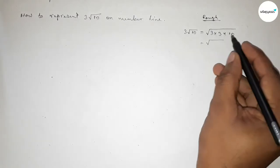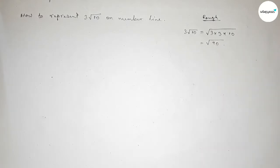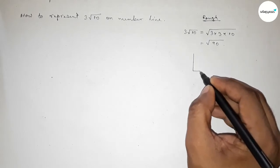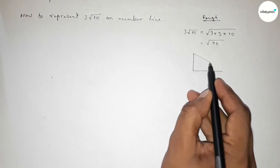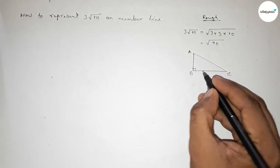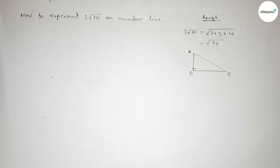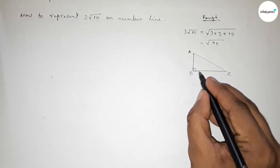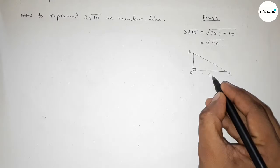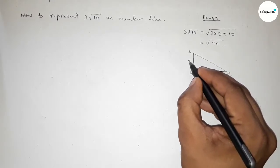So this is root 90. Now discussing about a right angle triangle. So first roughly drawing here a right angle triangle ABC and here 90 degree.